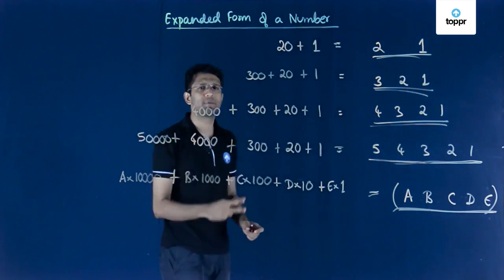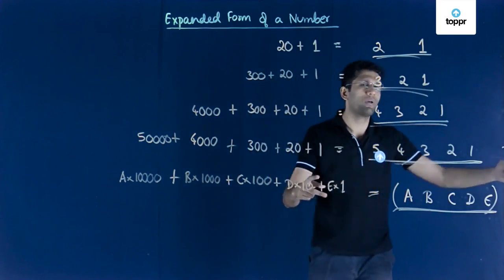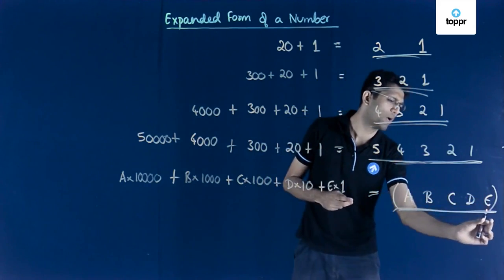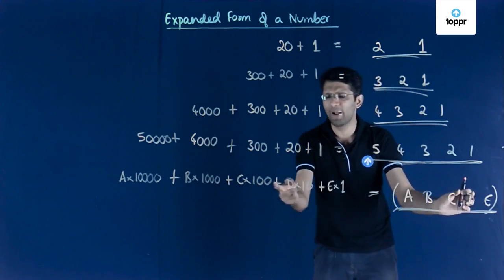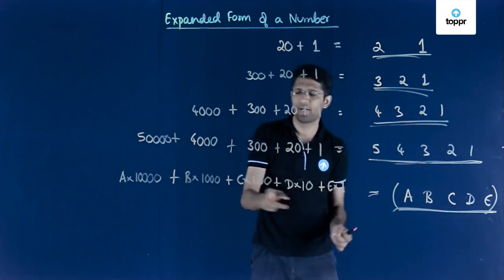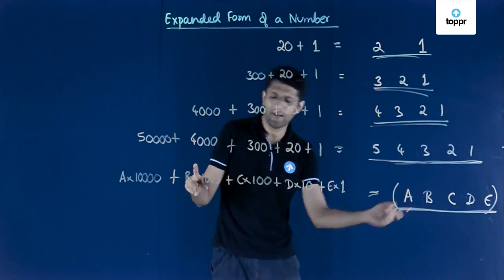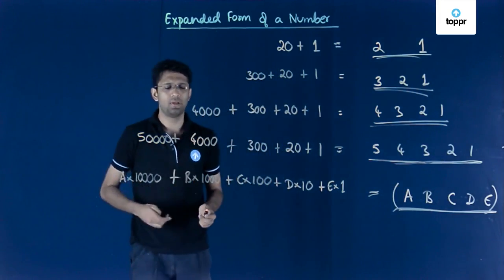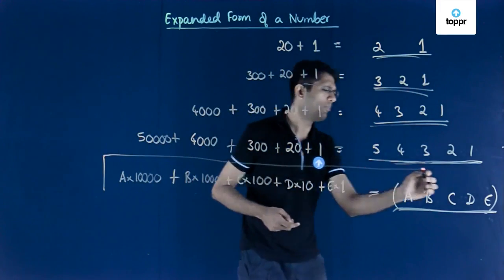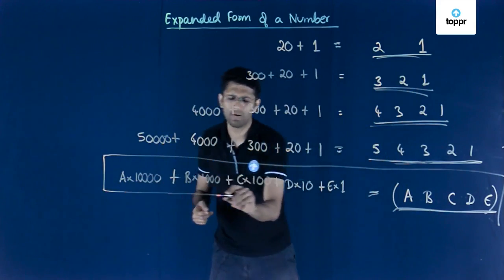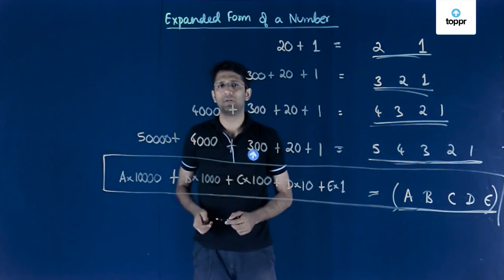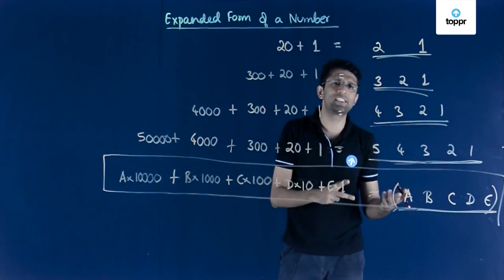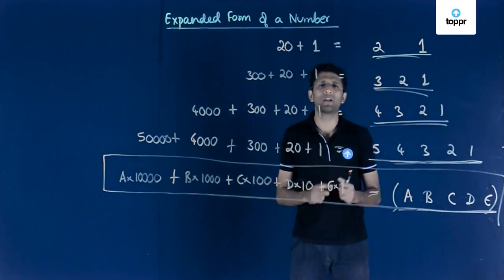In this manner, any large number can be represented in its expanded form. We write each digit — the face value — multiplied by the place value of that digit. This general expression is the expanded form of a five-digit number, but note that this is not restricted to any finite number of digits. It can be written for a five-digit number, six-digit number, seven-digit number, or in general any number with any number of digits.